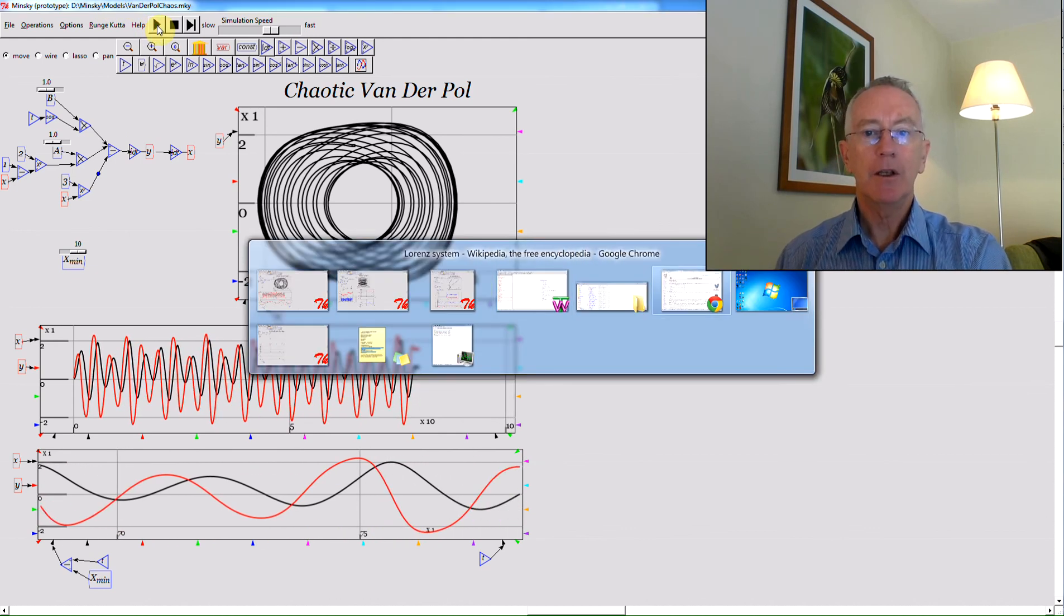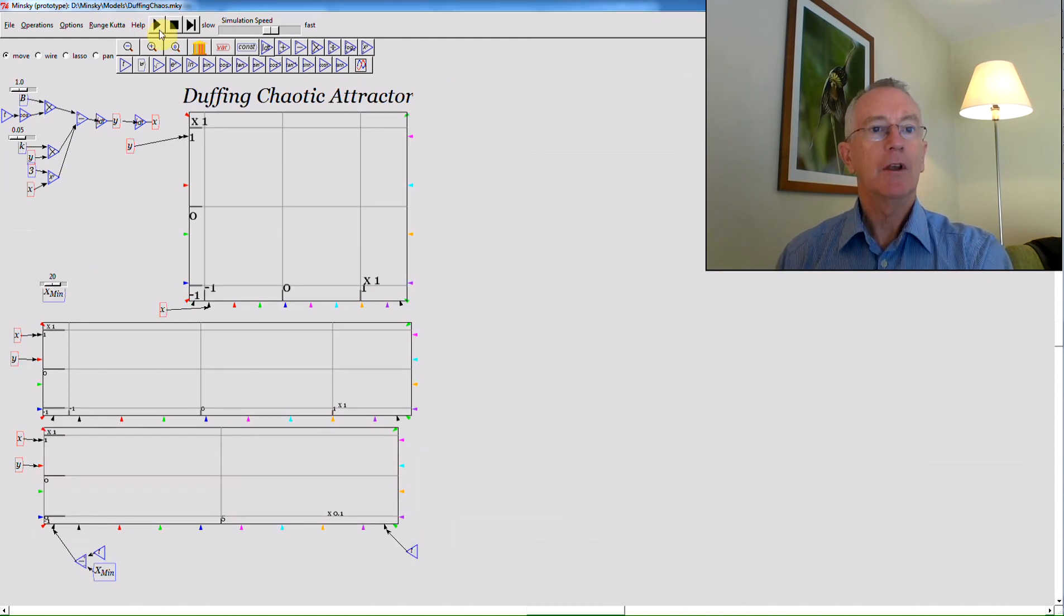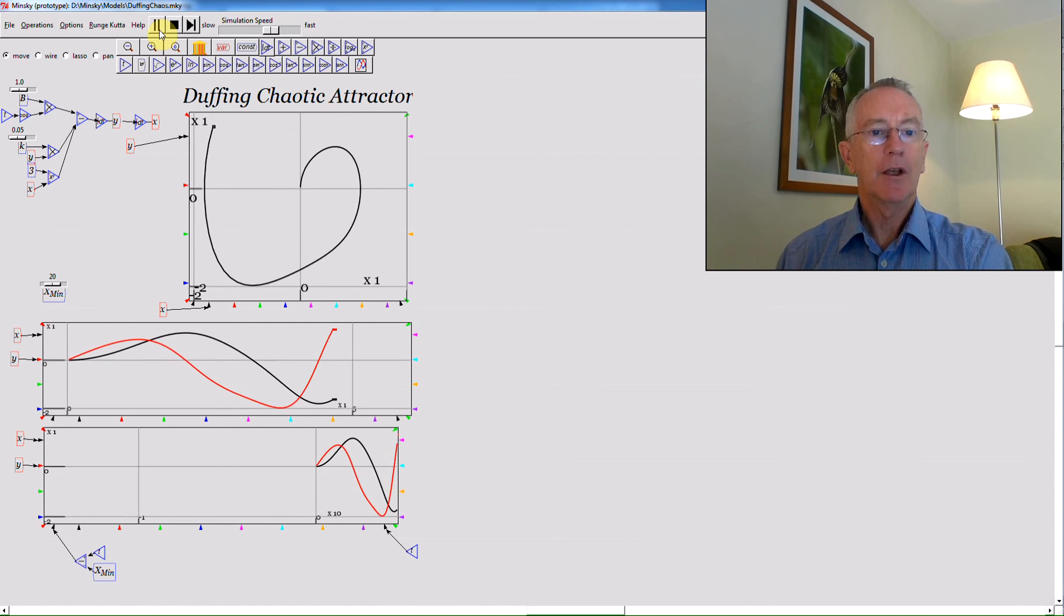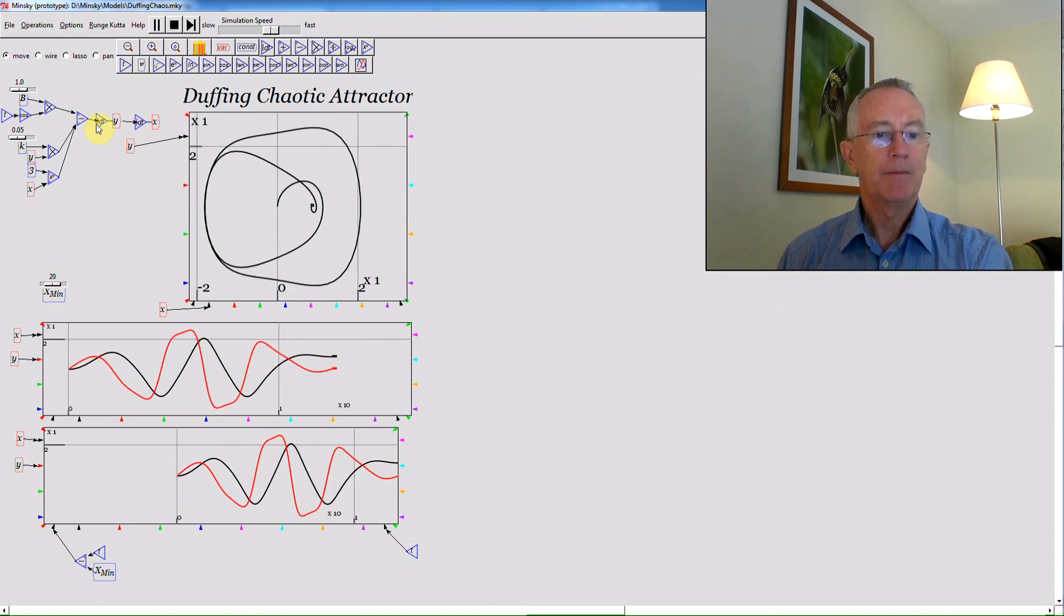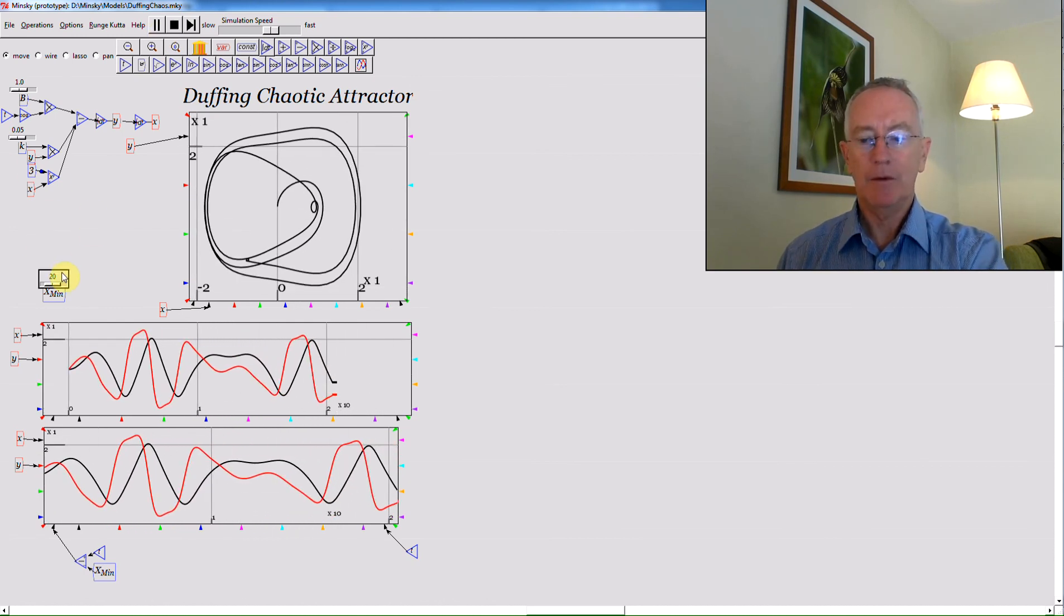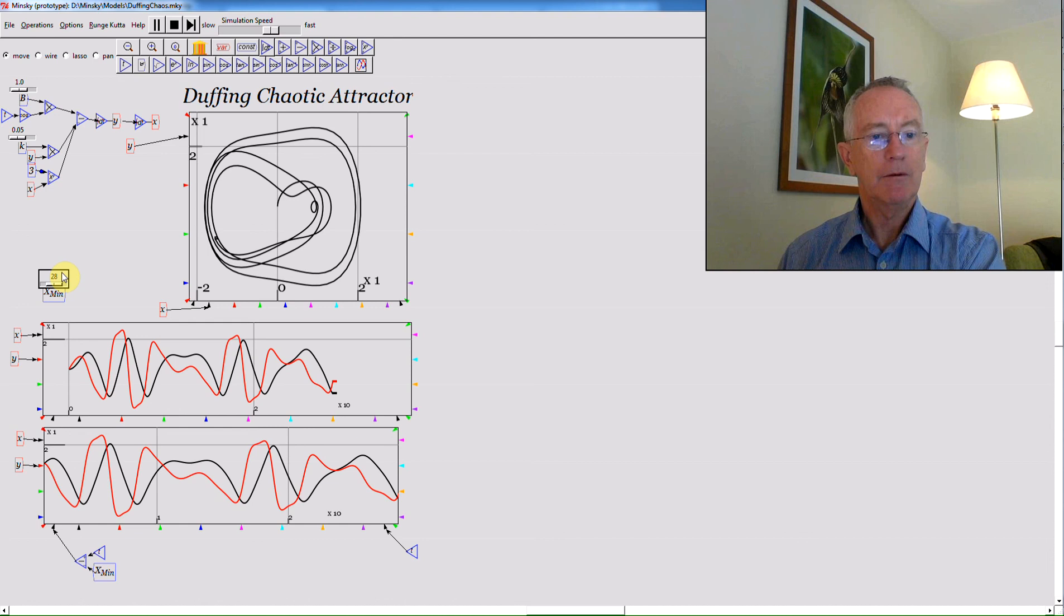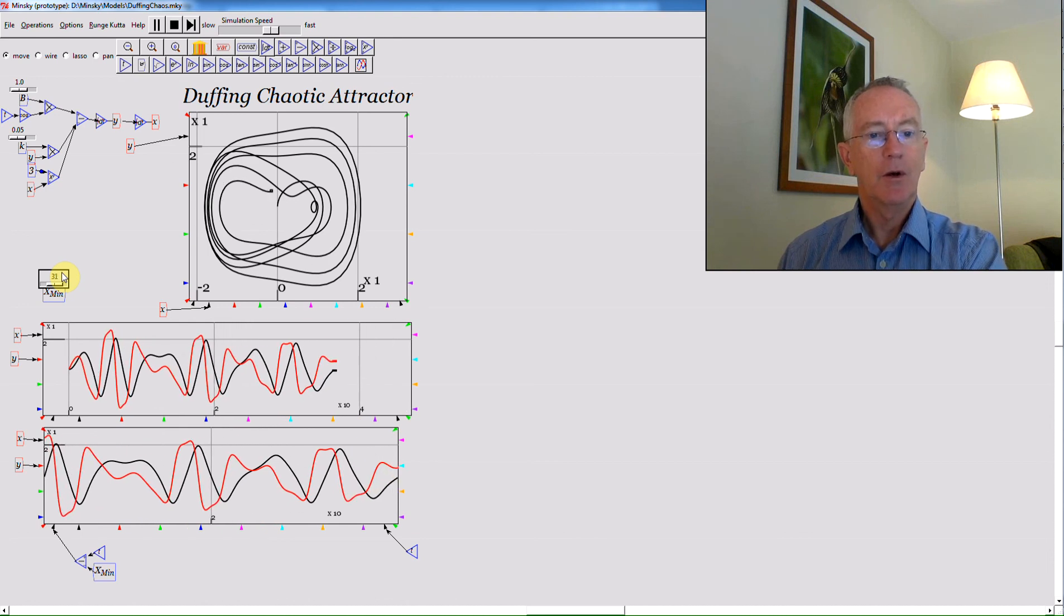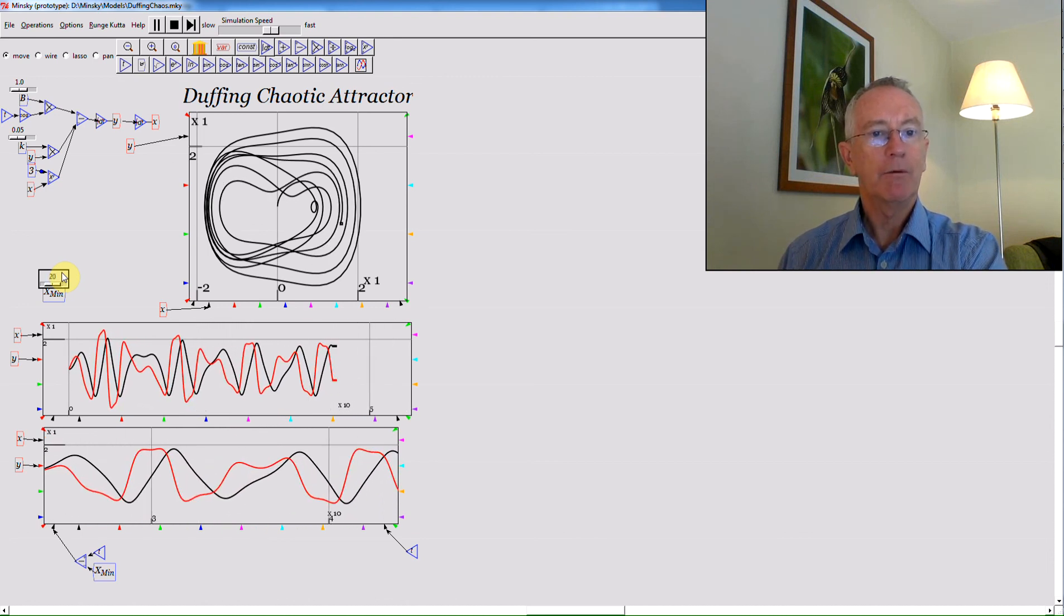And finally the Duffing Attractor, again pushed into the chaos mode. And again the same setup I deal with down the bottom there. I can make a larger range you see, or a smaller range, while you're running the simulation.